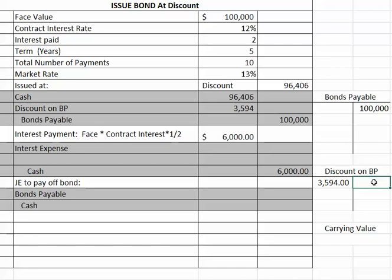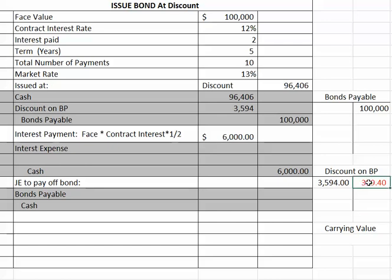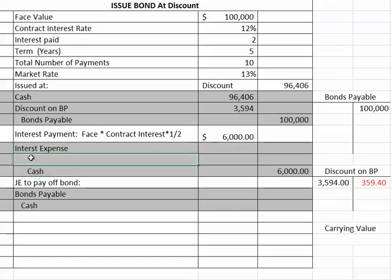We're going to use the straight-line method: take the balance in discount on bonds payable divided by the number of payments, and that gives us our credit to discount on bonds payable. You amortize that account every time you make an interest payment so that over time the balance will reach zero. In this second journal entry — shown in gray — you would credit discount on bonds payable for $359.40.